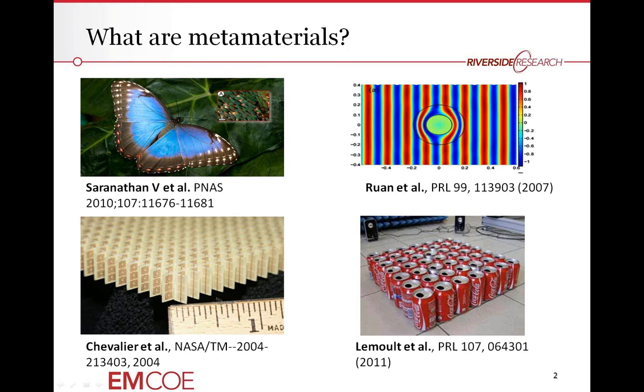Generally speaking, these are sub-wavelength structures. These things are smaller than the wavelengths that you're typically interested in, and they're very often periodic. So you'll have things like, if you look on the bottom right, I'll get back to that in a second, this is a periodic tiling of Coca-Cola cans for an acoustic metamaterial.